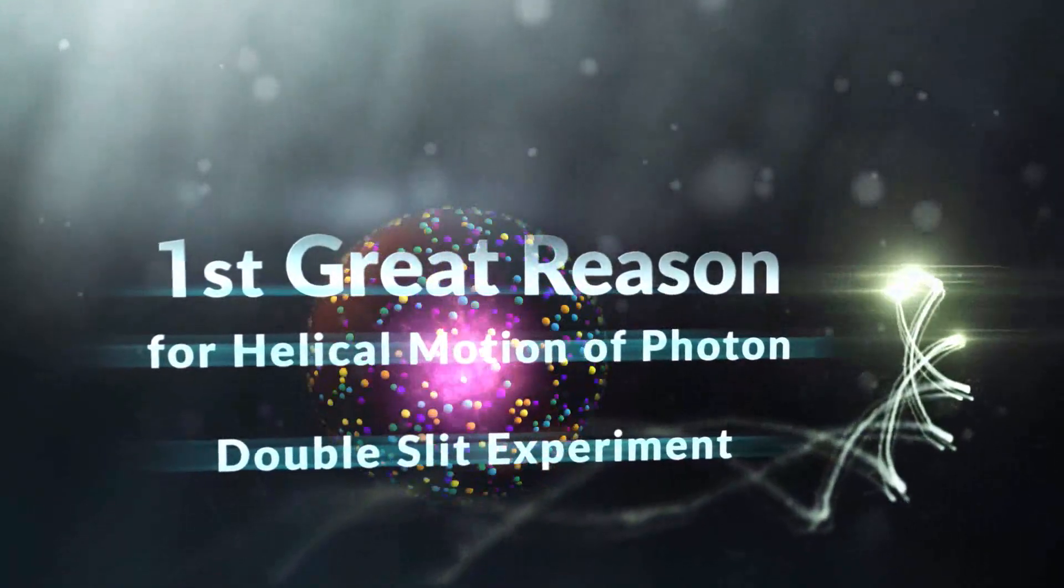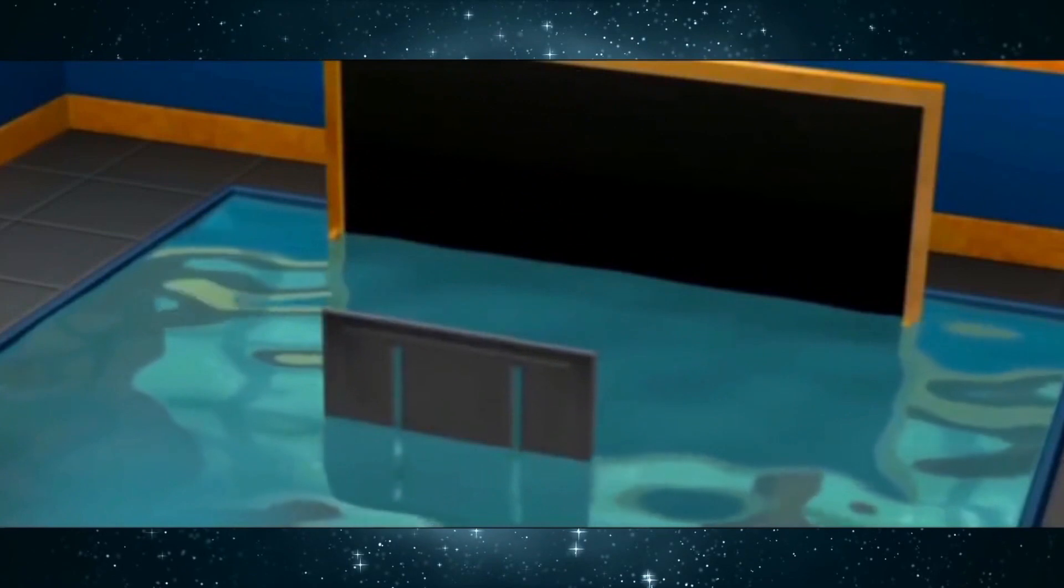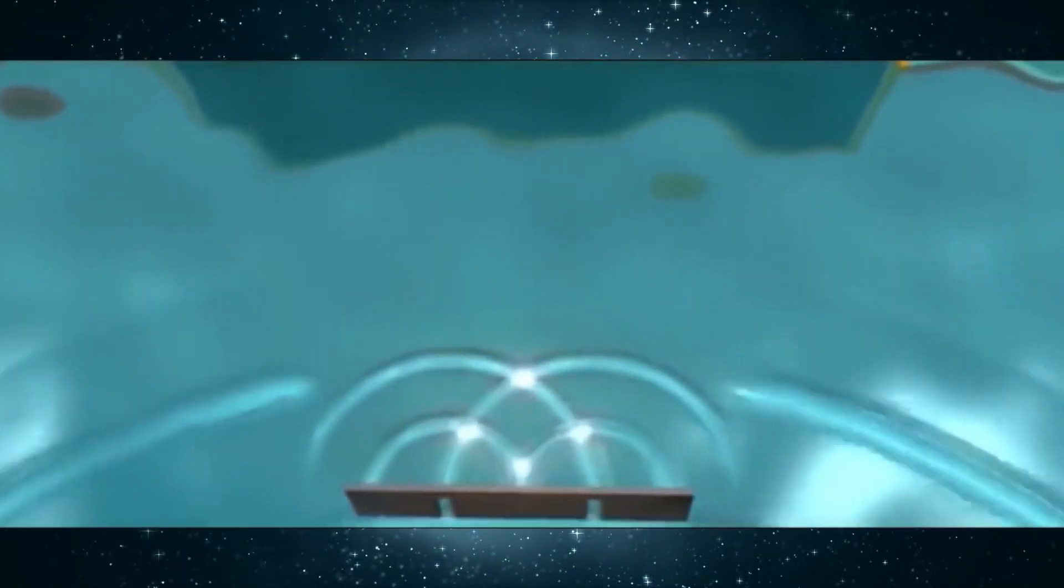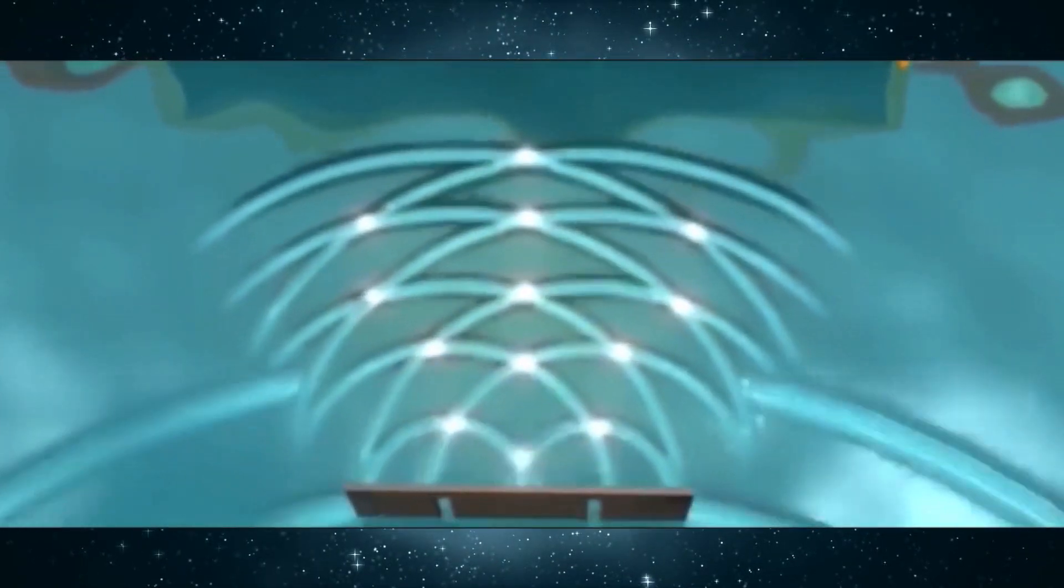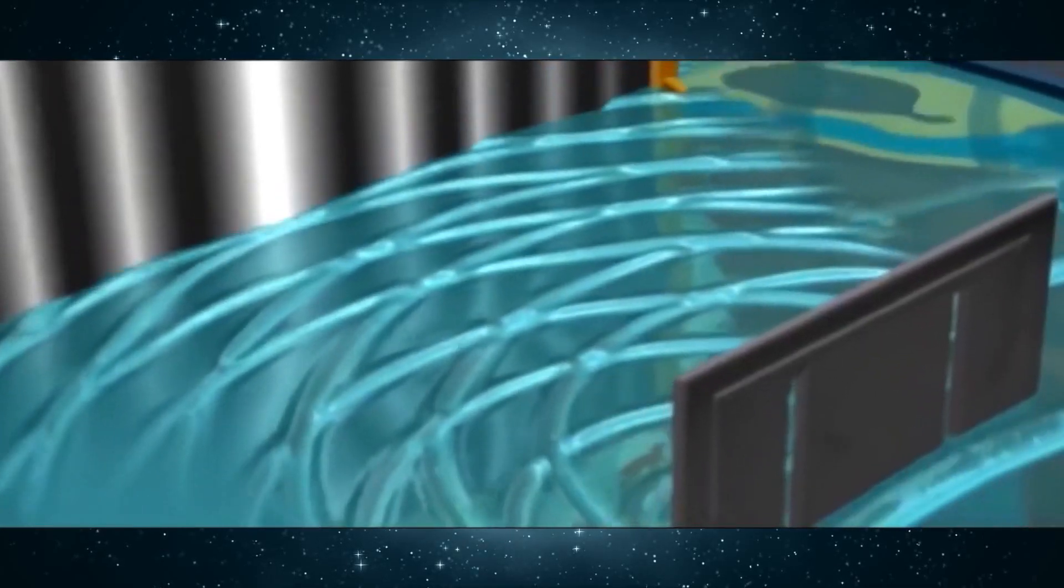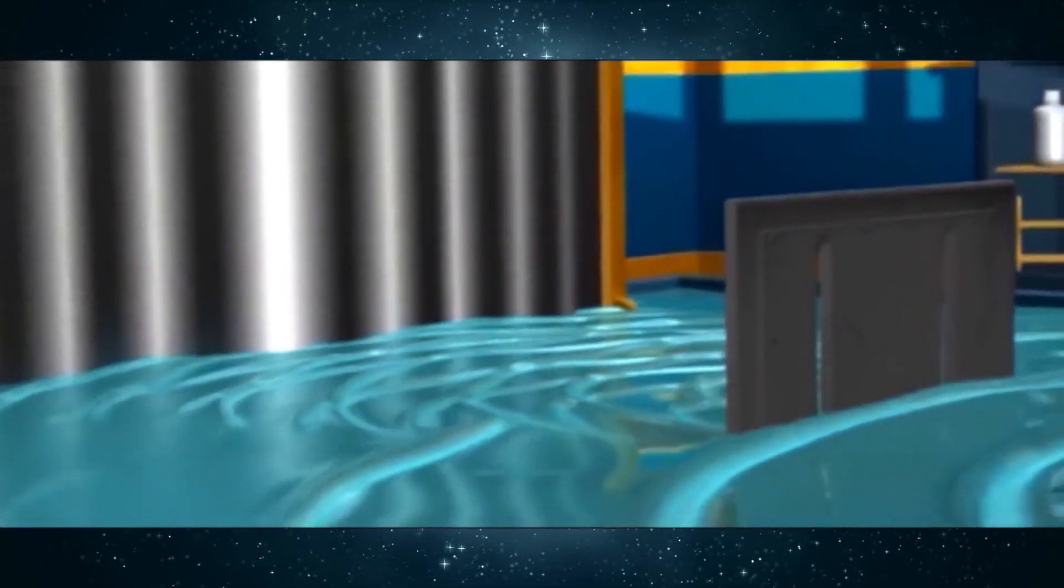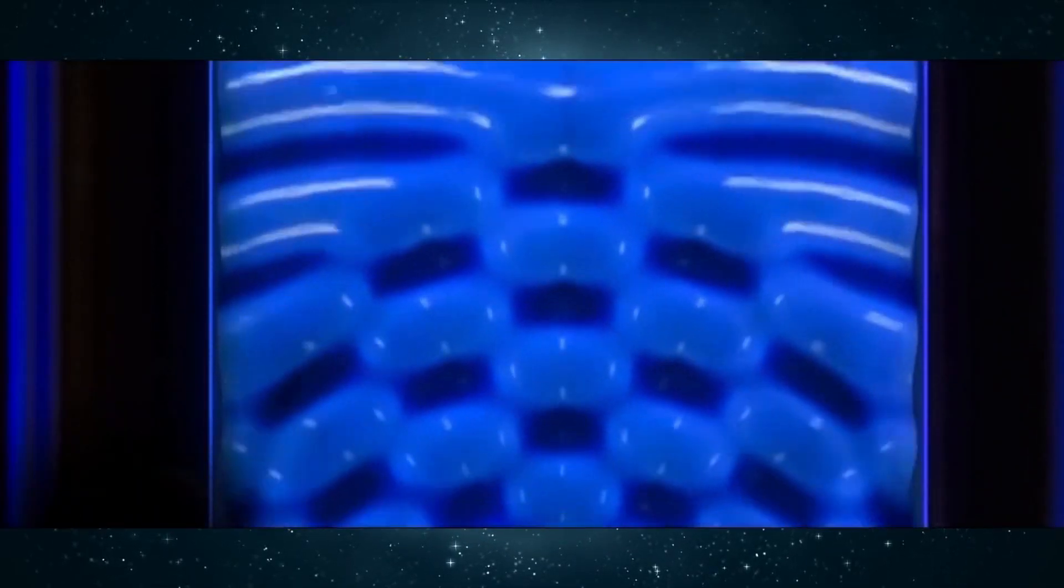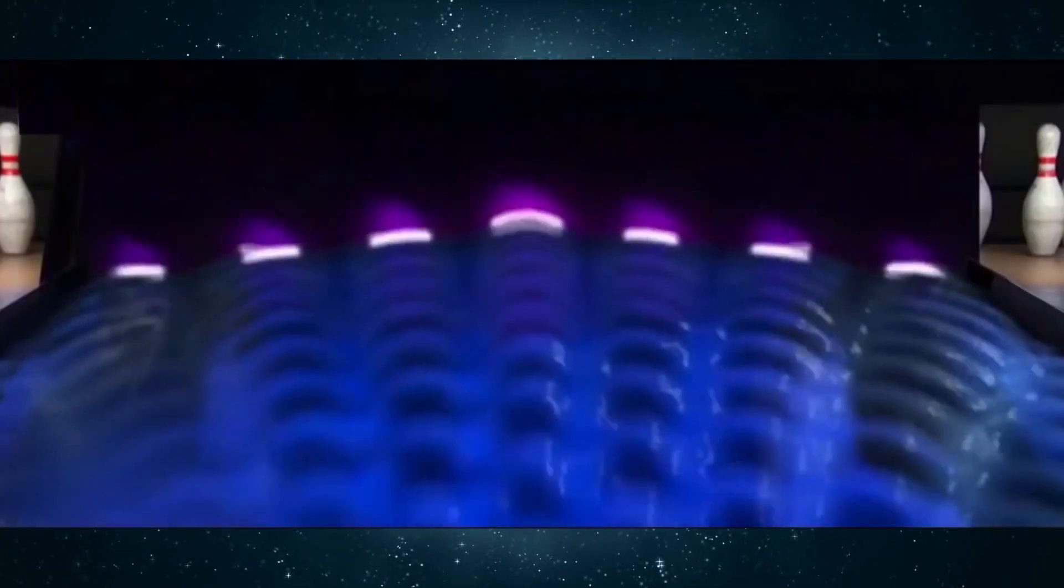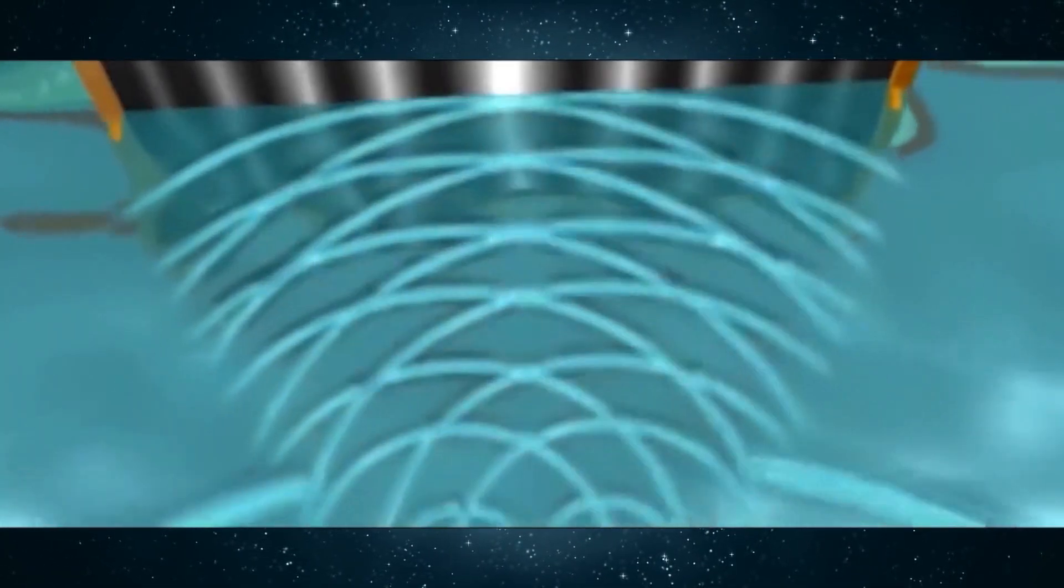1. Double Slit Experiment. The reason for not accepting the constant rest mass for photons and believing in its wave-like state was the famous experiment of Thomas Young. In this experiment, interference patterns are observed and to justify them, they are considered light as a wave.